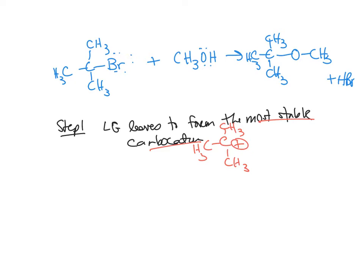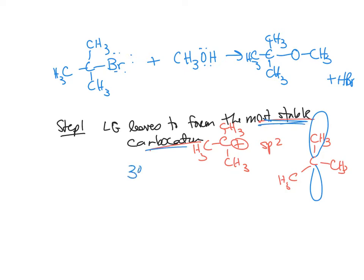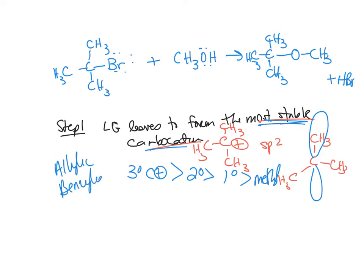The carbocation is sp2, so it's flat and planar — 120 degrees — and in the plane you have an unhybridized p orbital. You want the most stable carbocation. Tertiary carbocations are more stable than secondary, more stable than primary, and more stable than methyl. Also include allylic and benzylic carbocations — they are up there with tertiary and sometimes more stable.